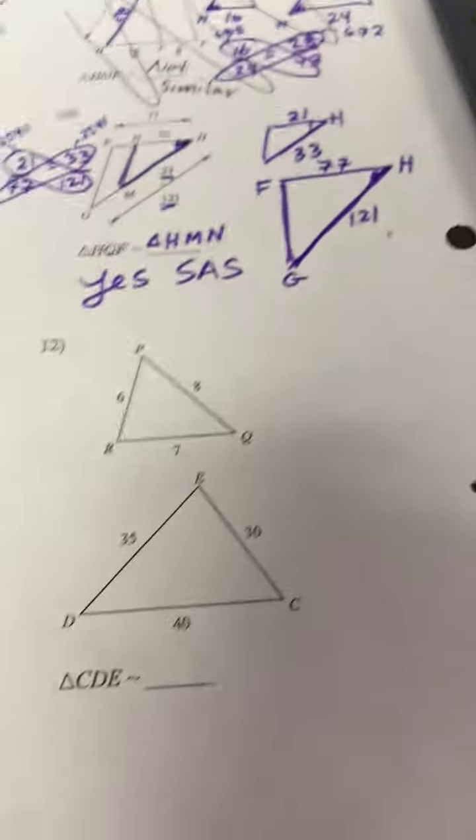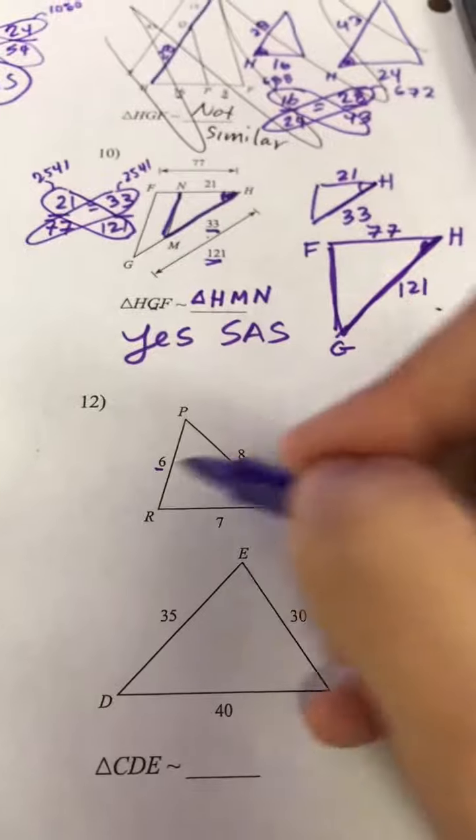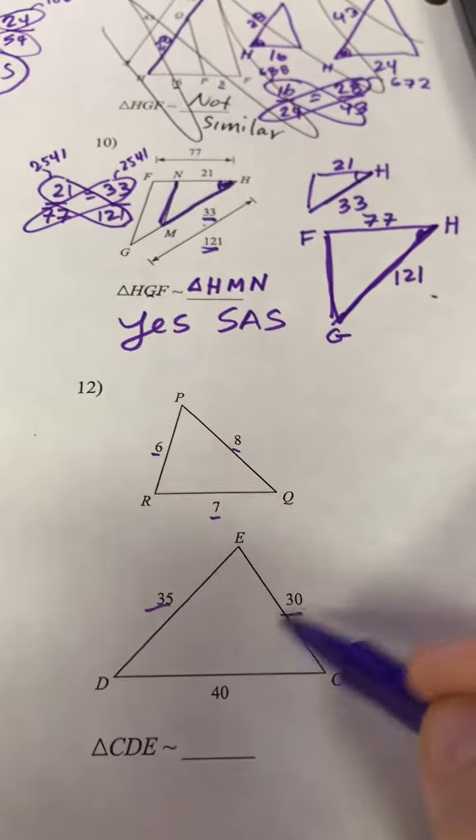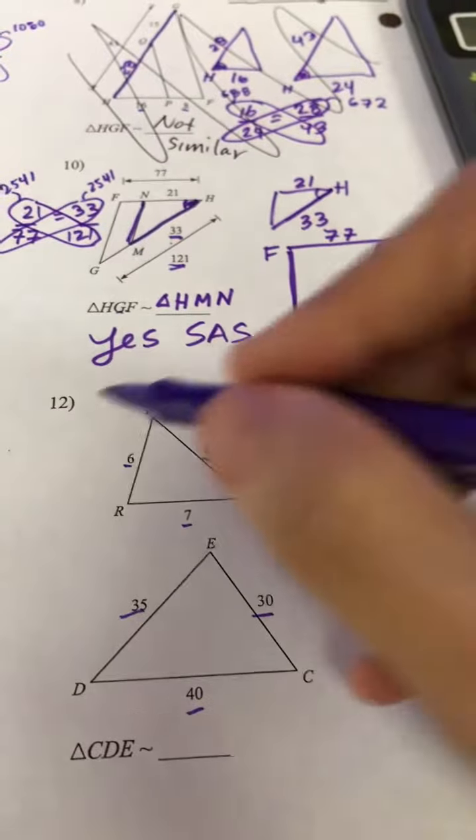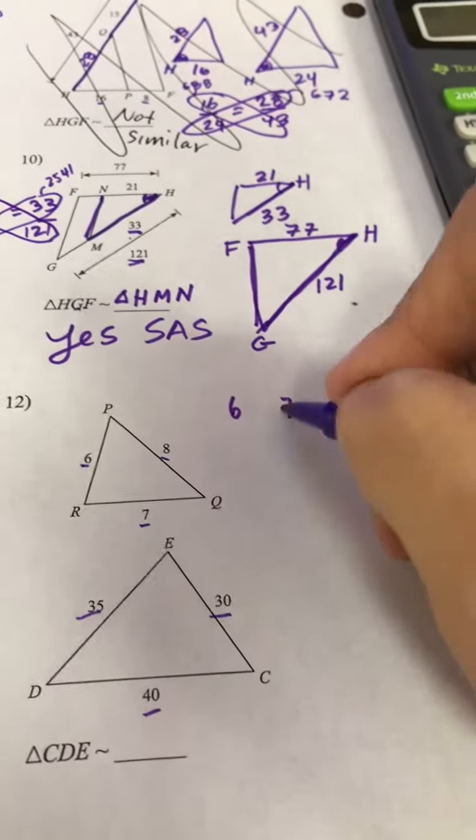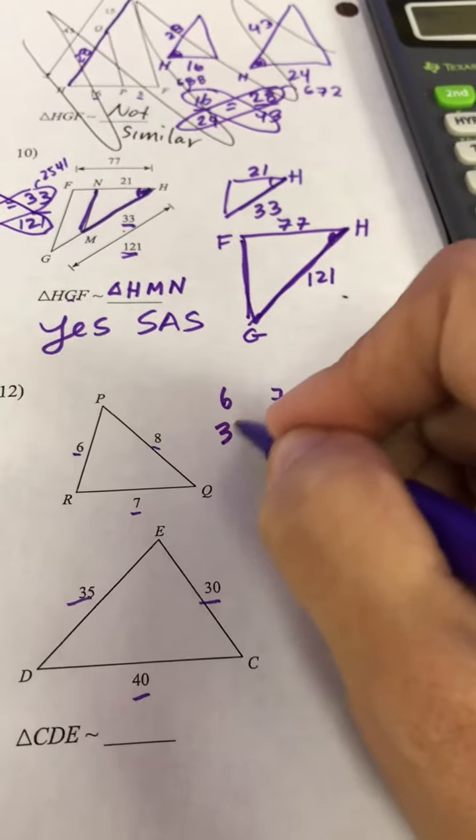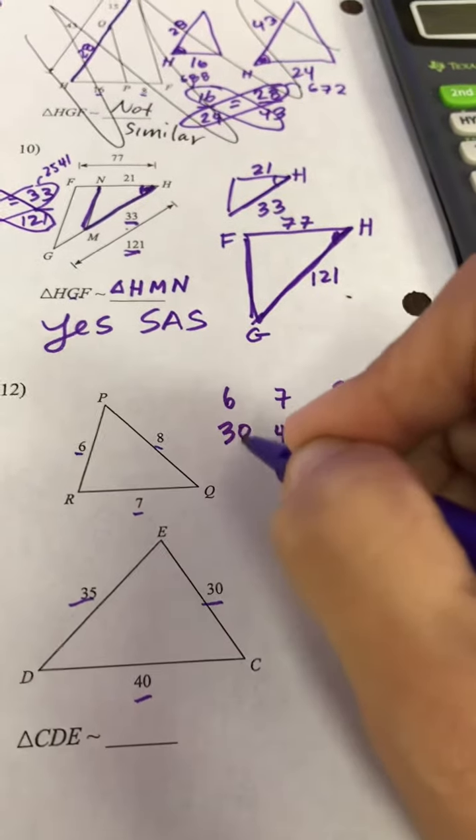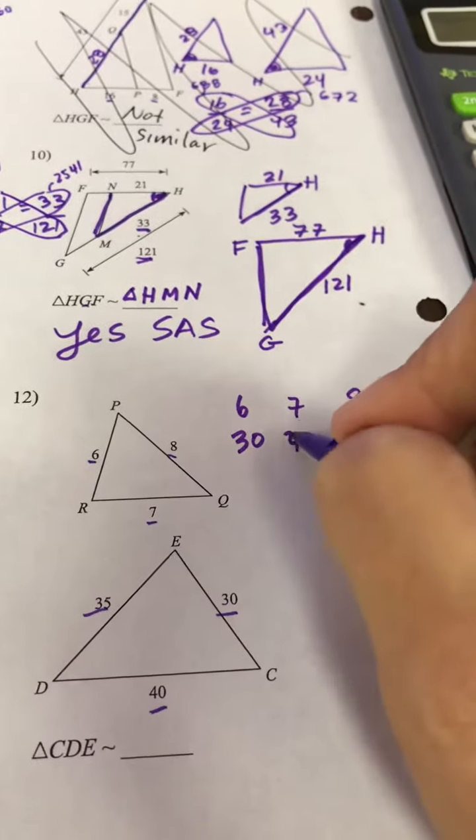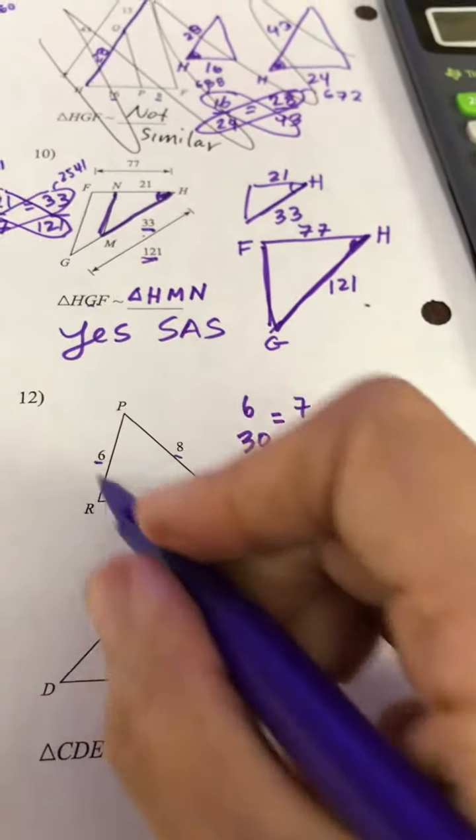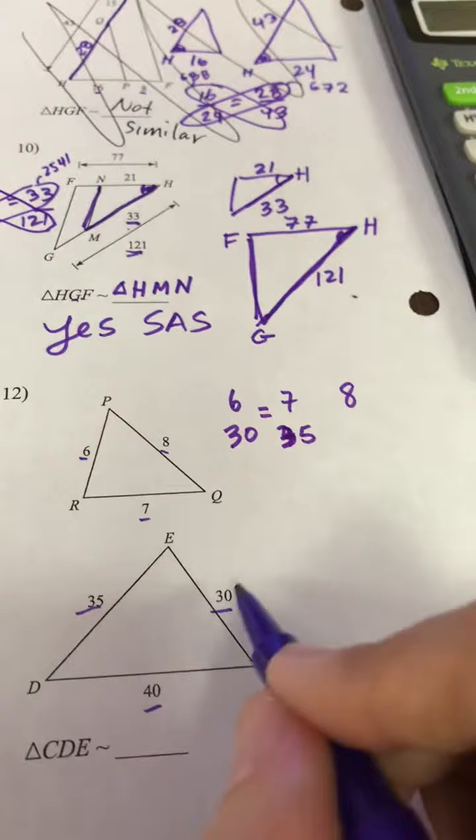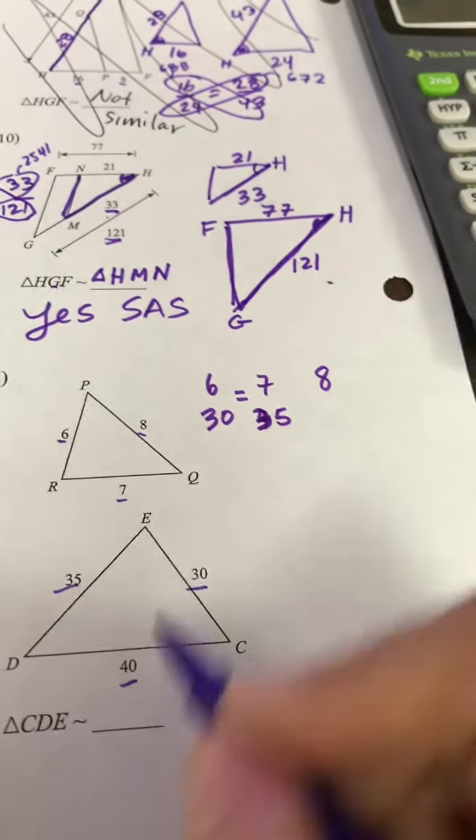Last question. So I have three pieces of side evidence, and three pieces of side evidence. So if all these ratios end up the same, we're going to say yes because of side, side, side similarity. I've got to order these least to greatest. I've got to be real careful with that. So least to greatest, 6, 7, 8. Least to greatest, 30, 35, 40.